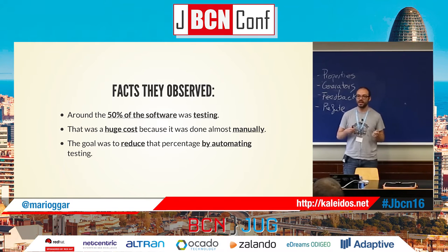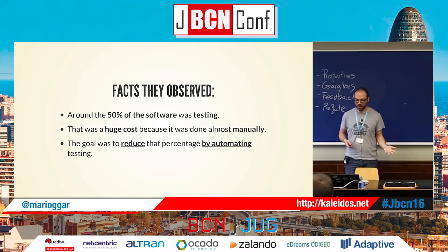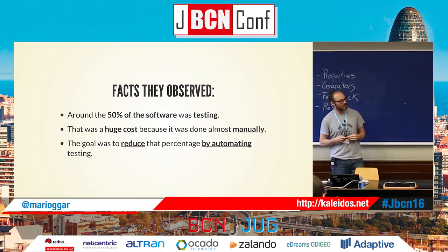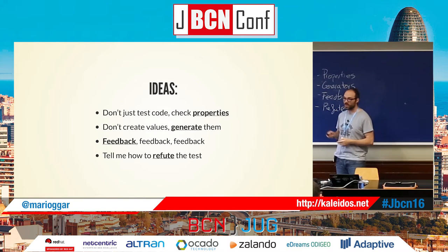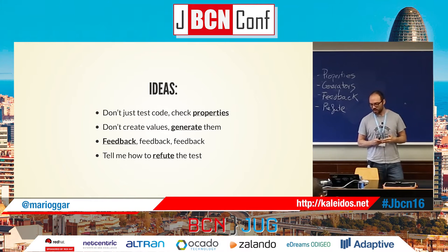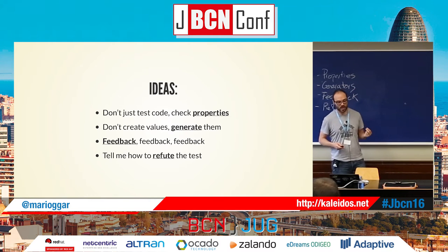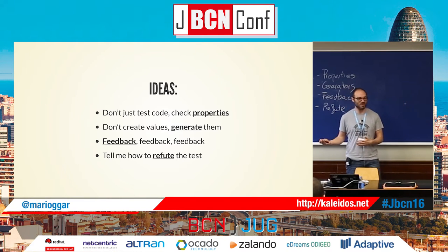Imagine we spend half of our time creating tests or maintaining tests instead of creating new code. That of course takes a huge cost because most of the time it's done manually. Their goal was to reduce that manual testing by automated testing. The important idea is to check properties, not just to test code. And don't create values — generate them. Life is too short.